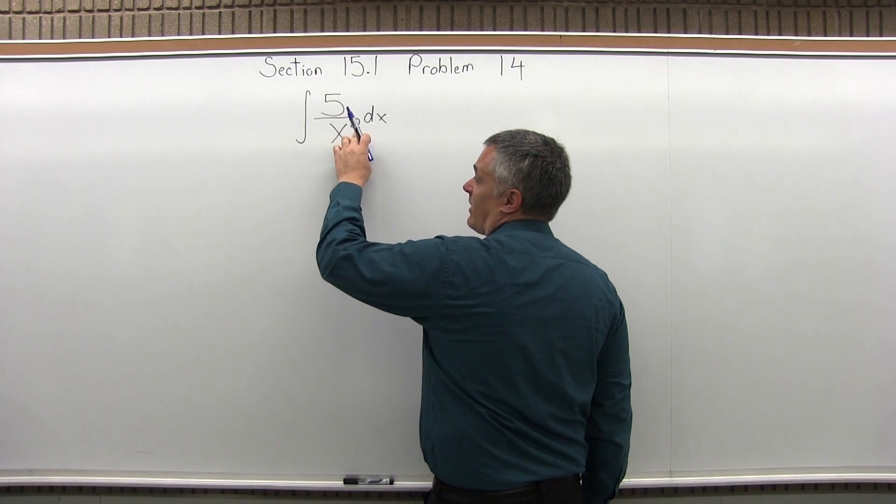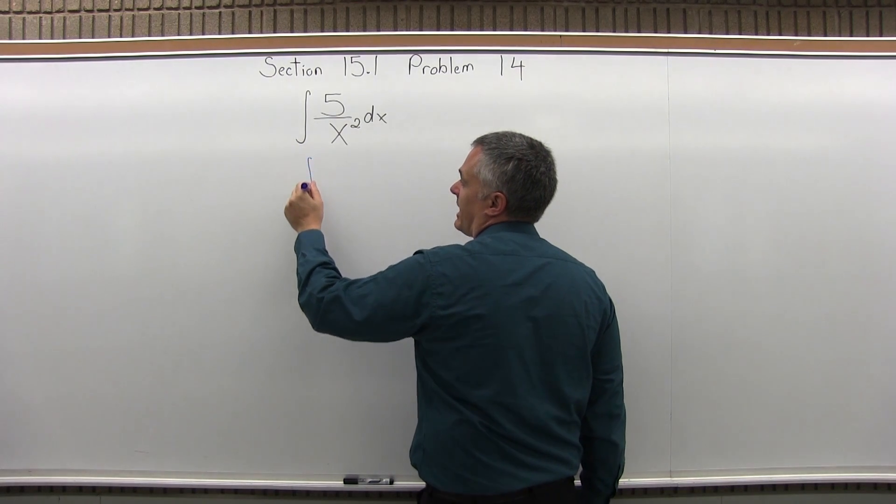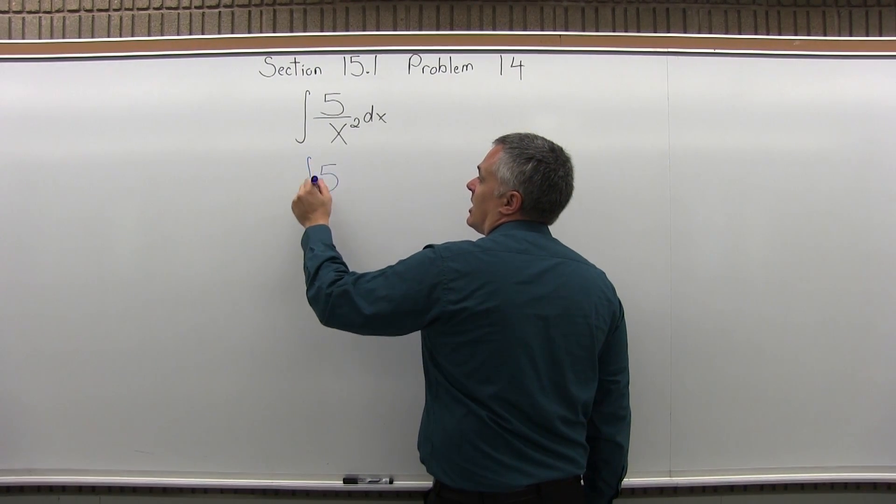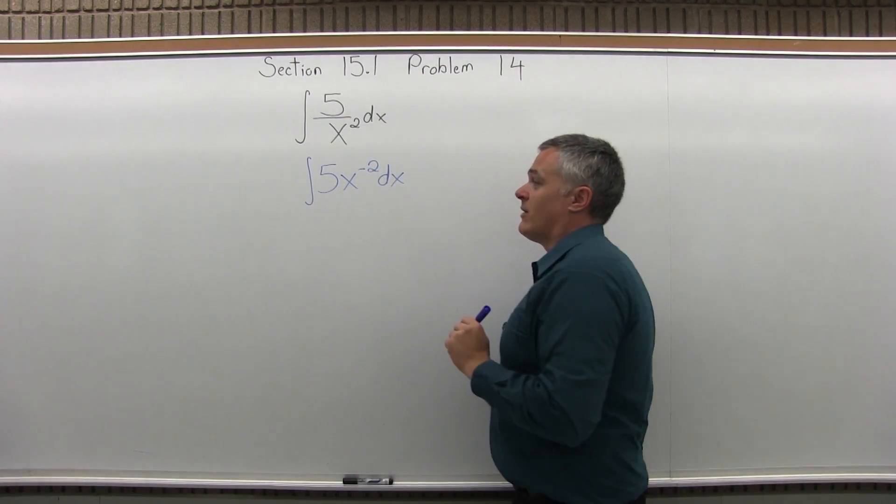It starts off similar. I can't take the integral when I have a variable in the denominator. My formulas just don't fit that format. So I start by writing the x with the 5 and making it a negative 2 power.